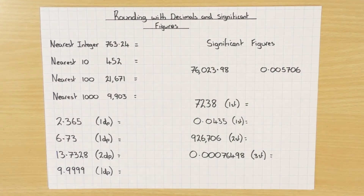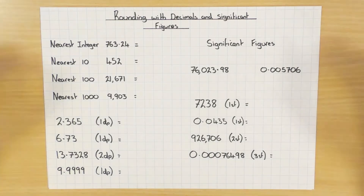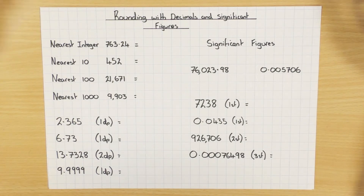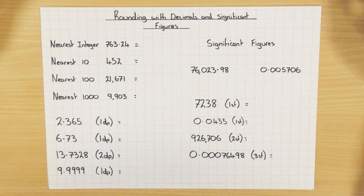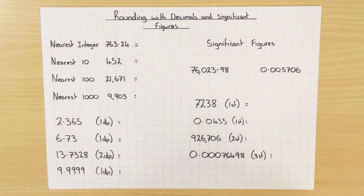In this video we're going to look at rounding to decimal places and to significant figures. It comes up all the time in different topics — whenever there's decimal places, for example in circles or Pythagoras. It's always worth usually one mark in an exam, so it's an easy mark to pick up and we definitely don't want to be losing it.